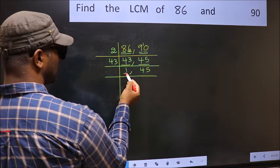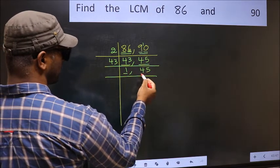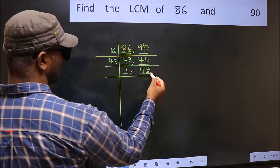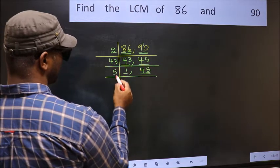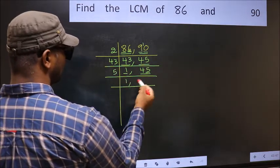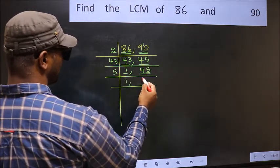Now we got 1 here, so focus on the next number 45. Last digit 5, so take 5. When do we get 45 in 5 table? 5 times 9 is 45.